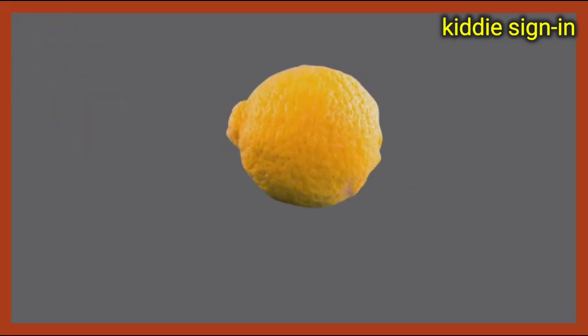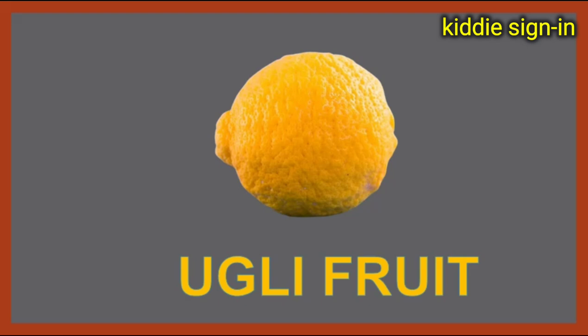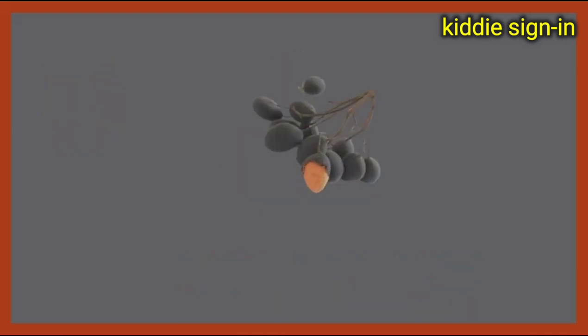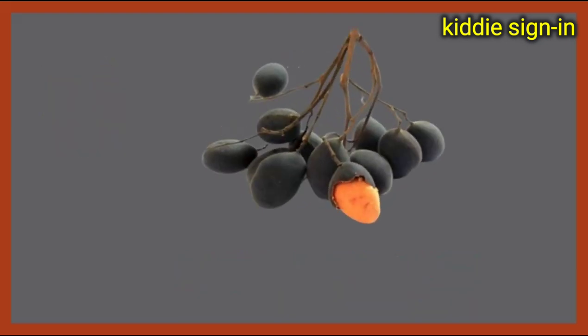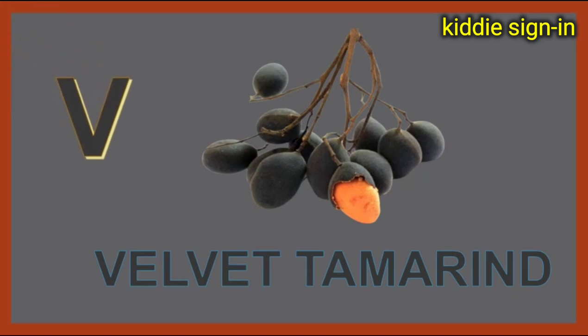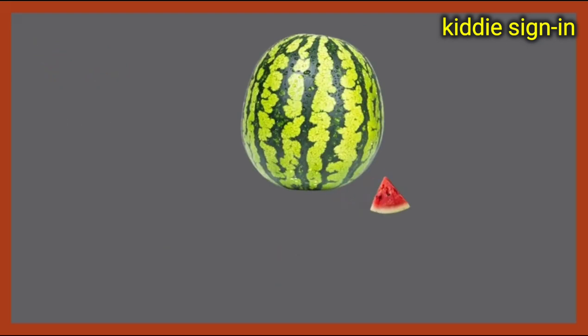Can you guess this fruit? This is ugly fruit. U for ugly fruit. Do you know the name of this fruit? This is velvet tamarind. V for velvet tamarind. Can you guess this fruit?